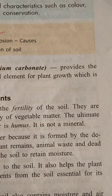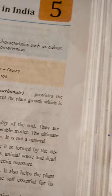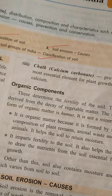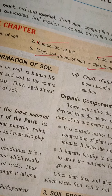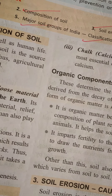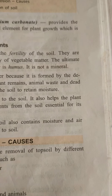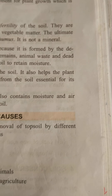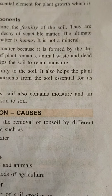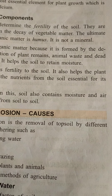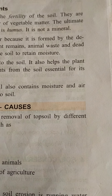Now we will discuss soil erosion — its causes and meaning. Soil erosion is the removal of the top layer of soil by agents like wind, water, and waves, which carry soil from one place to another. Several factors and agents are responsible for soil erosion: running water, wind, overgrazing, human activity, animals, and faulty methods of agriculture.